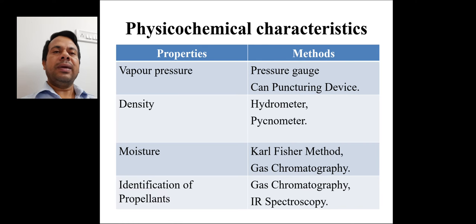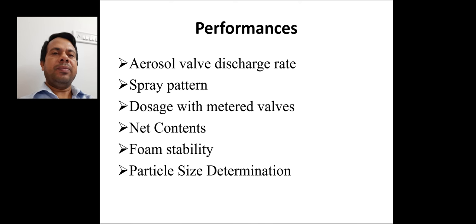Next is physicochemical characteristics. It includes vapor pressure, density, moisture content and identification of propellant. Vapor pressure is measured by pressure gauge or can puncturing device. Density is measured by hydrometer and pycnometer. Moisture content is measured by Karl Fischer method and gas chromatography method. Identification of propellant is tested by gas chromatography and infrared spectroscopy.